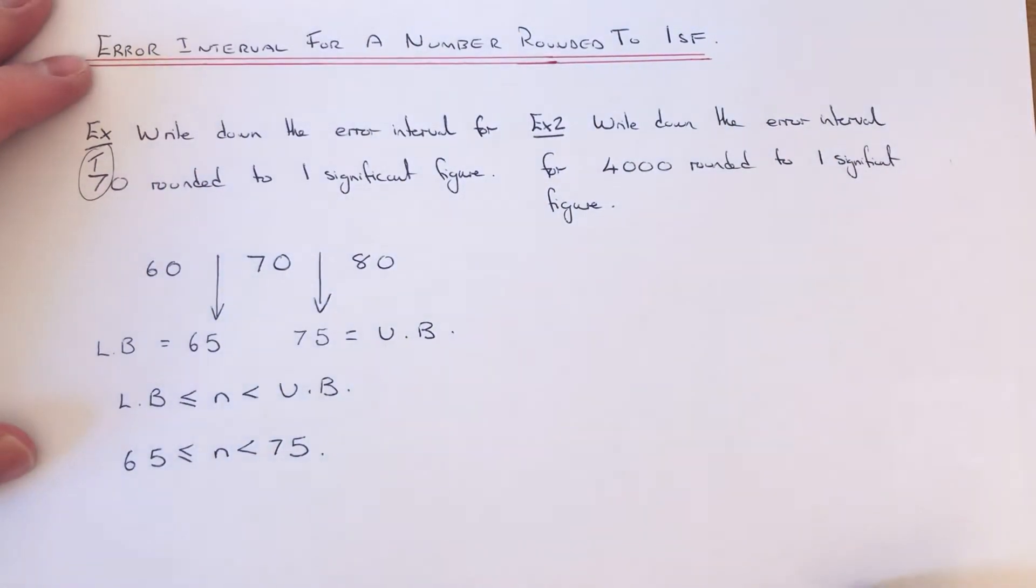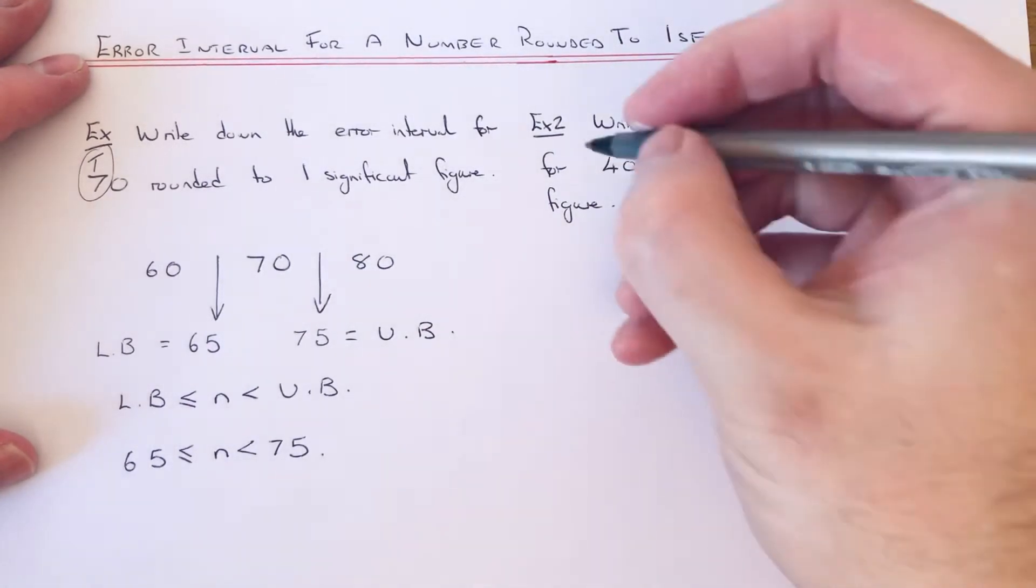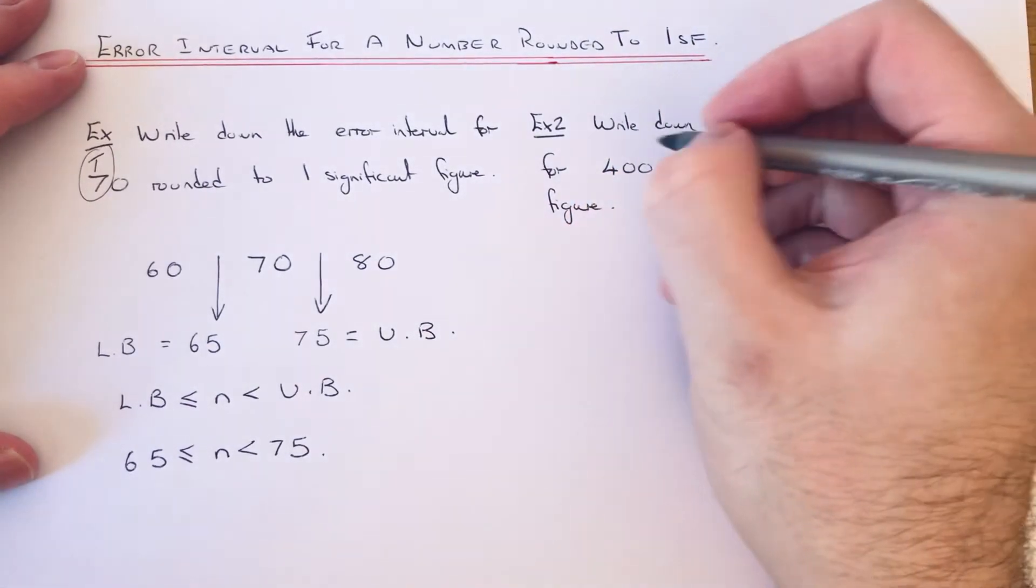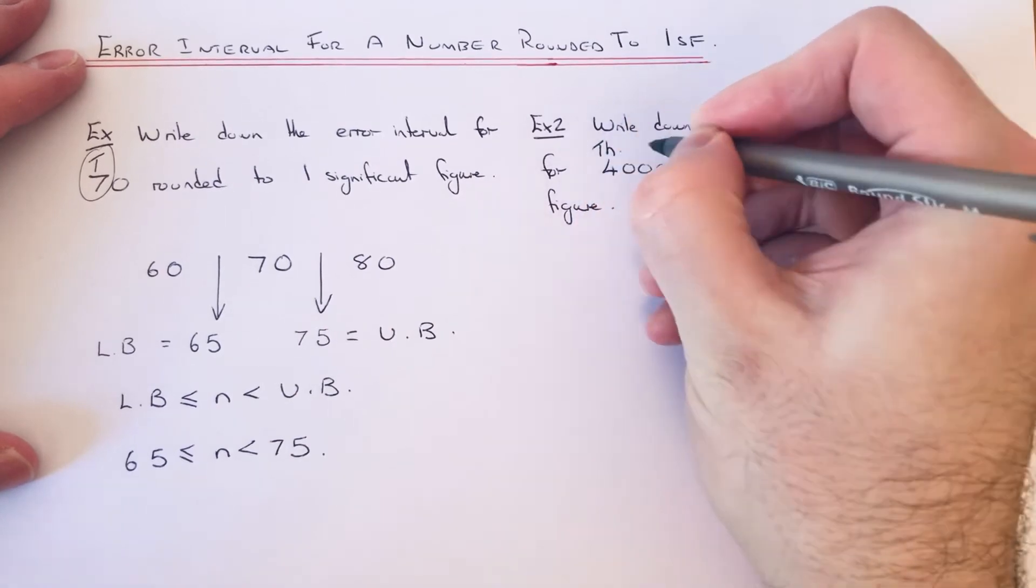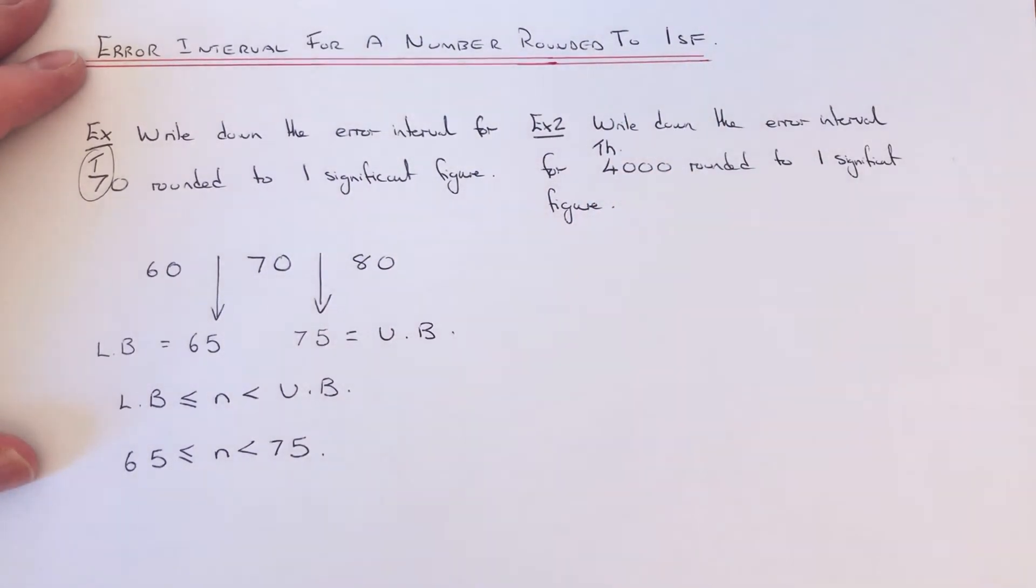We've got to write down the error interval for 4,000 rounded to one significant figure. So again, it's been rounded to that first digit. Our first digit is in the thousands column this time, so that means our scale is going up by 1,000 each time.